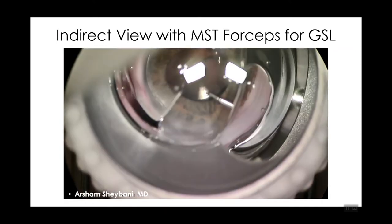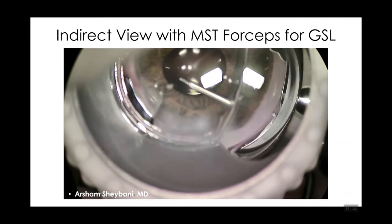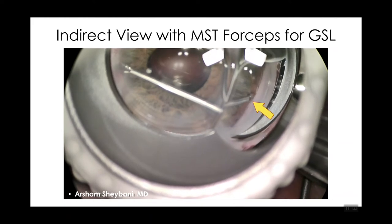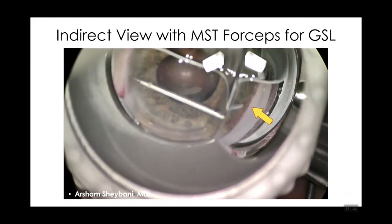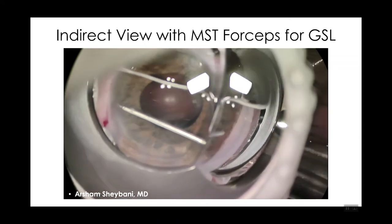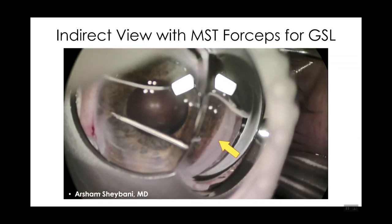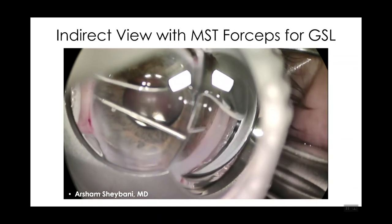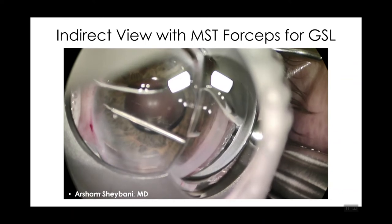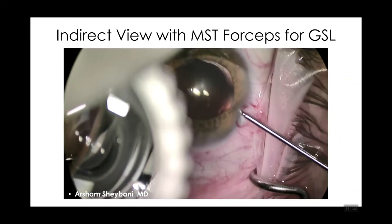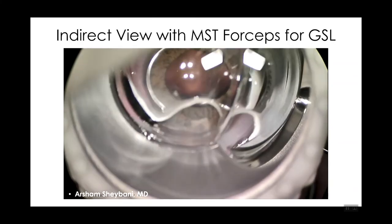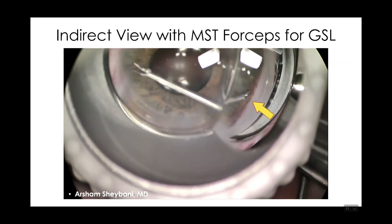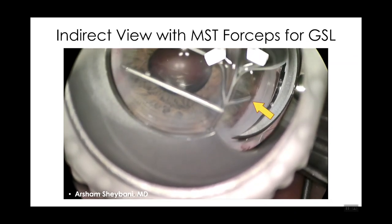You can also perform the procedure with an indirect view. All of the prior videos were direct views. Here, Arsham Shabani from WashU is performing an indirect view with MST forceps taking down the PAS. You can see where the arrow indicates exactly where the PAS was and how it's pulled down. This is a more difficult technique, but it has the advantage that you don't have to reposition the patient or the microscope — you can keep the microscope upright as you would for cataract surgery.